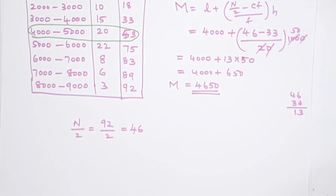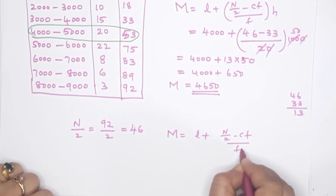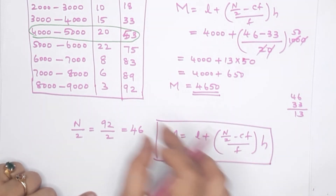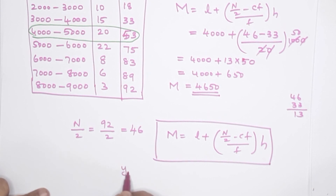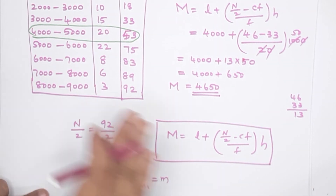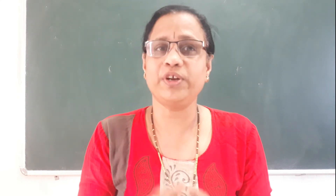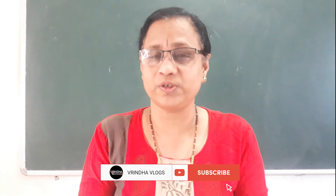The median is equal to L plus N by 2 minus CF by F into H — that is the formula. Now we have to use the formula, use the difference, apply it correctly. Now we have to start the chapter on page number 254 — there are 3 problems in all. If you have problems, focus, concentrate. Thank you.